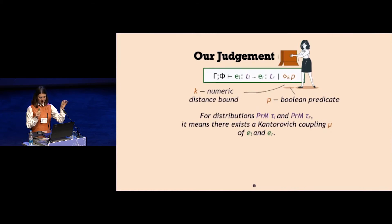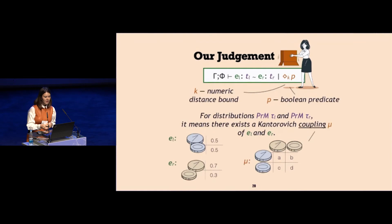Now that I have defined the meaning for the primitive types, I go and lift it to monadic types. For two expressions that are distributions, I say that this judgment means that there must exist a Kantorovich coupling of two distributions represented by left and right expression.